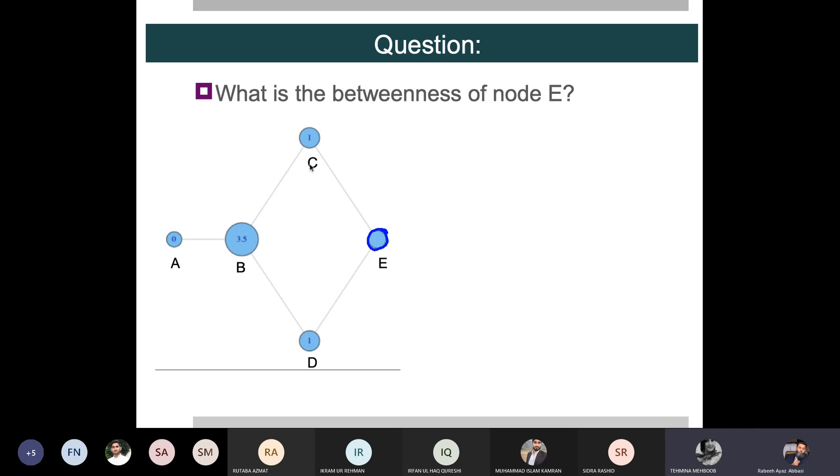One: C, B, D and two: C, E, D. Two shortest paths. How many of these ones involve E? One. So betweenness centrality for E is 1 over 2.